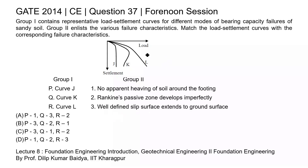In this question, a figure is given depicting a few load versus settlement curves, and two groups are given: Group 1 and Group 2. In Group 1, the names of the curves are given, and in Group 2, the failure characteristics are given. We need to do the correct match between Group 1 and Group 2.